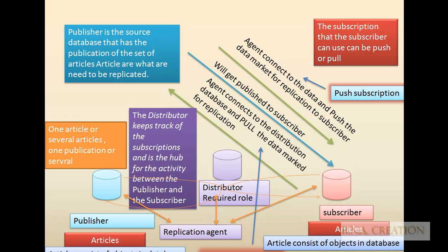The publisher is a source of the database that has the publication — a set of articles. Articles are the contents of the database, like tables, views, and stored procedures. In replication terminology, these are known as articles.